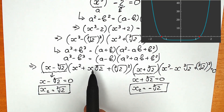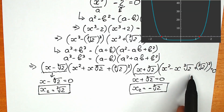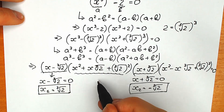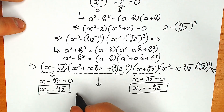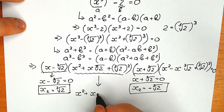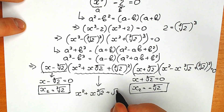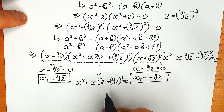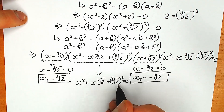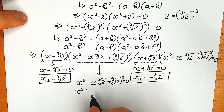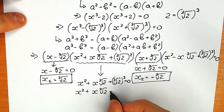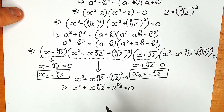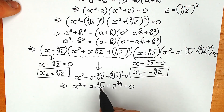We still have two quadratic parentheses to solve. Let's start with x squared plus x times cube root of 2 plus cube root of 2 squared equals 0. We can rewrite it as x squared plus x times cube root of 2 plus 2 to the power two-thirds equals 0. This is a quadratic equation with coefficients a equals 1, b equals cube root of 2, and c equals 2 to the power two-thirds.